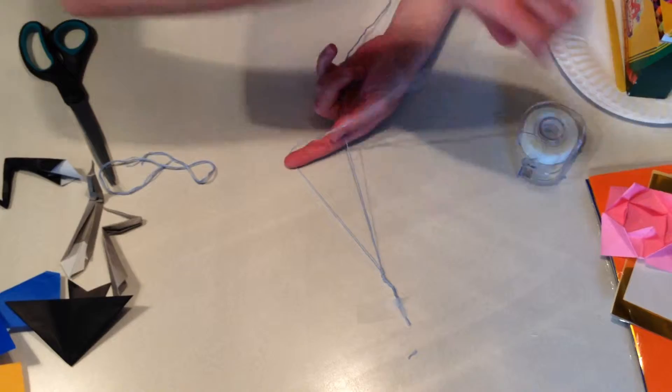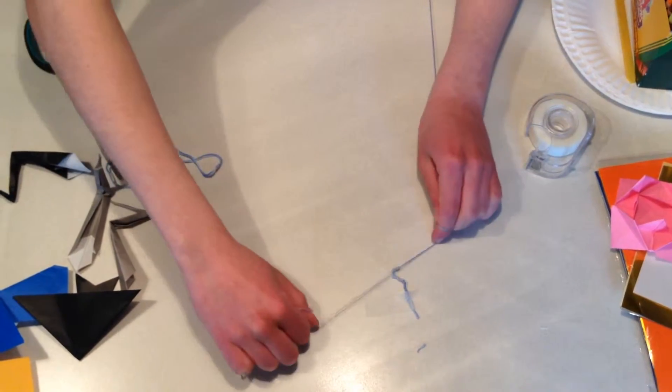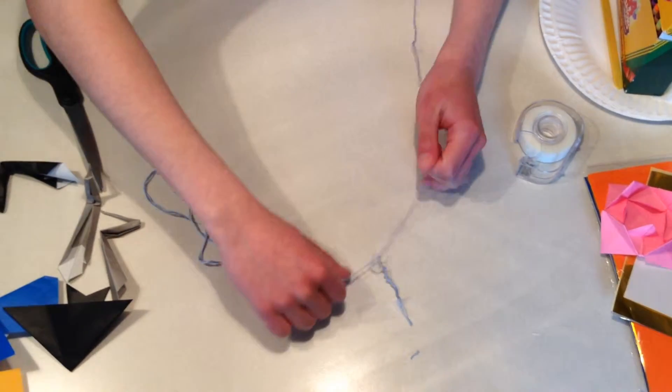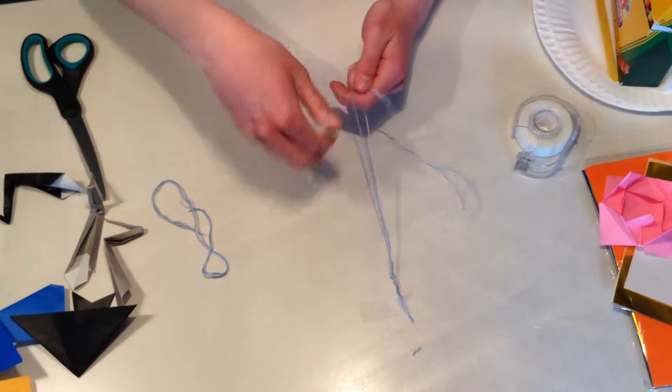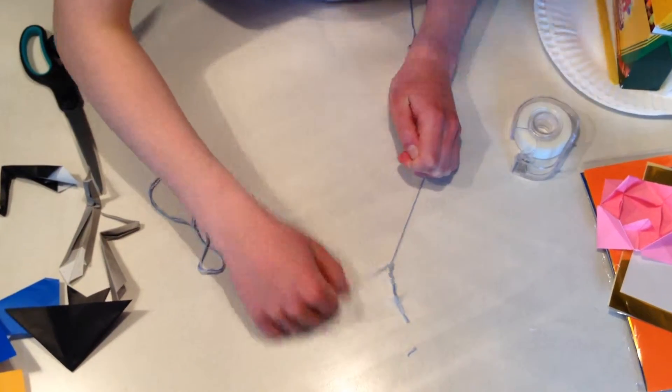You're going to keep doing that and you'll get pretty fast at it. Keep making that four with that color. Then you'll start to see it swirl around like you can see here on the one I have.